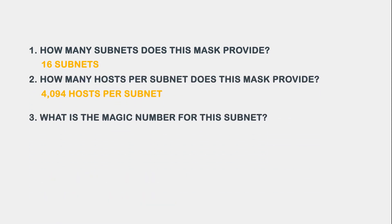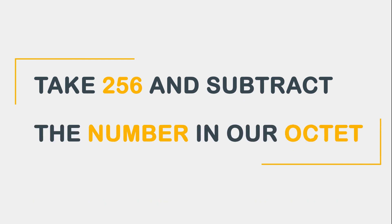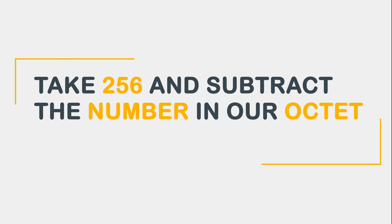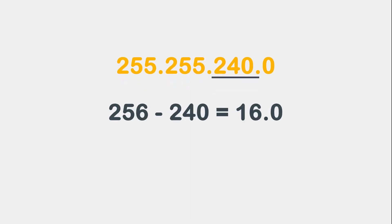Question 3: What is the magic number for this subnet? To calculate the magic number, we take 256 and subtract the number in our octet of concern. In this example, the number in our octet of concern is 240. So our answer to question 3 is 256 minus 240, which is 16.